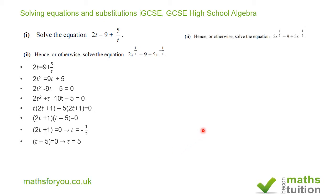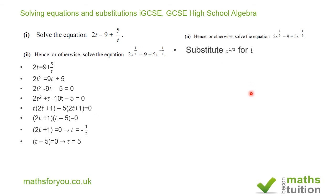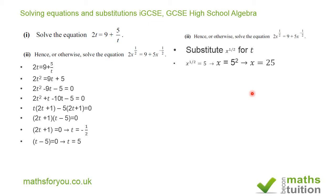Moving on to part two: it says hence or otherwise solve the equation 2x to the power of 1 half is equal to 9 plus 5x to the power of 1 half. If we substitute x to the power of 1 half for t, we end up with x to the power of 1 half is equal to 5, because t is equal to 5.